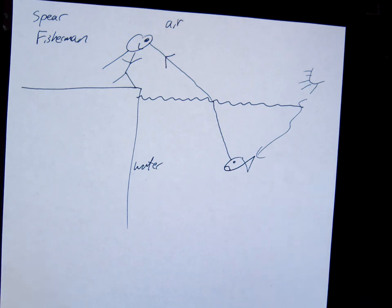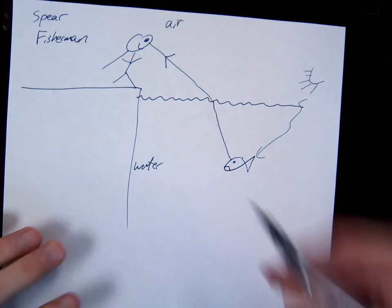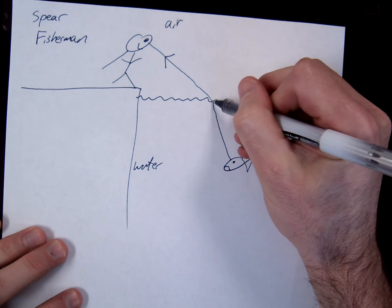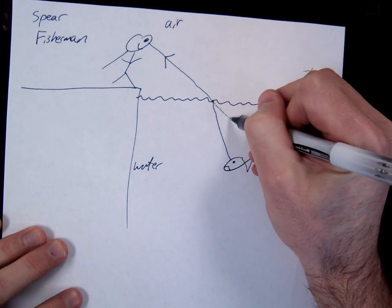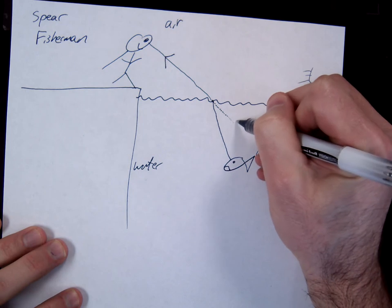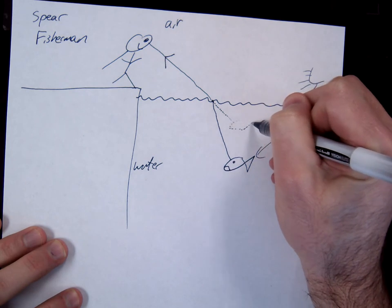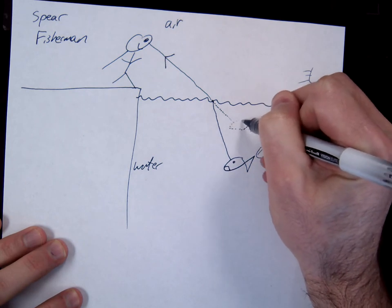Now here's the concept of this problem. According to my brain, how should light travel? Straight, okay? My brain cannot comprehend this refraction that's happening. So according to my eyes, according to my brain, this fish is not where I think it is, or this fish is not where I see it, okay?